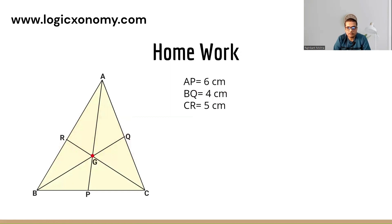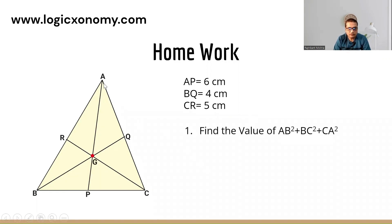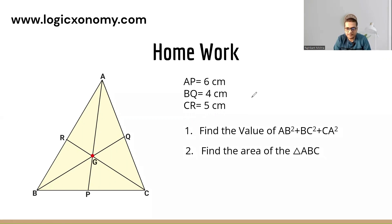Now this is your homework problem, which will be discussed in the next video. Here AP, BQ, and CR are the medians of triangle ABC. If the lengths of AP, BQ, and CR are given as 6 cm, 4 cm, and 5 cm respectively, then: first, find the value of AB² + BC² + CA² — the sum of squares of the sides; and second, find the area of triangle ABC.